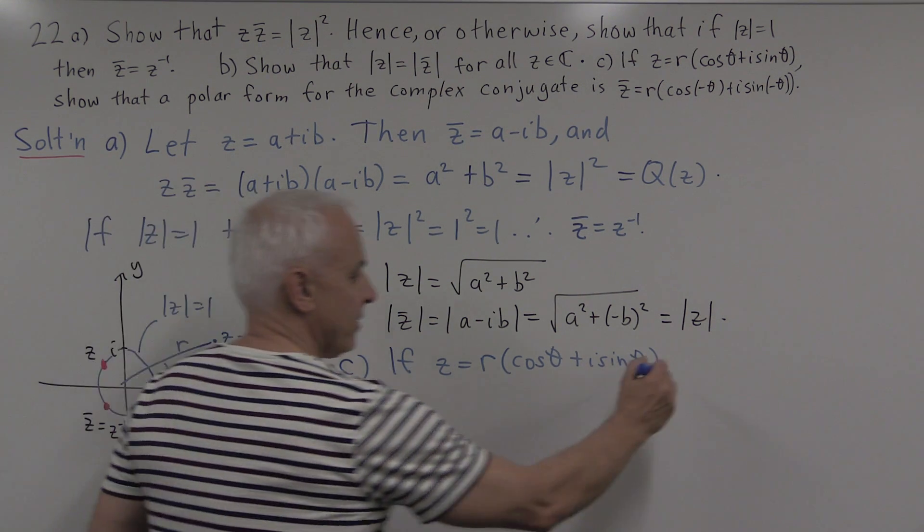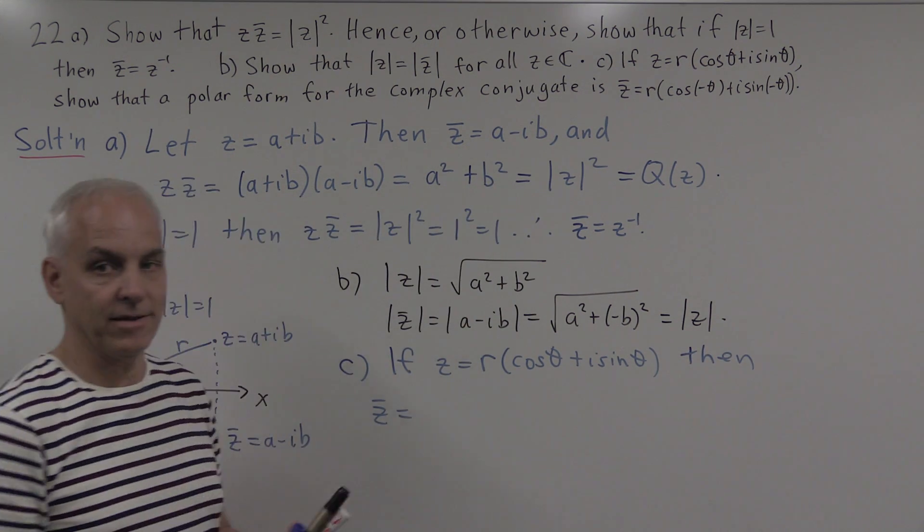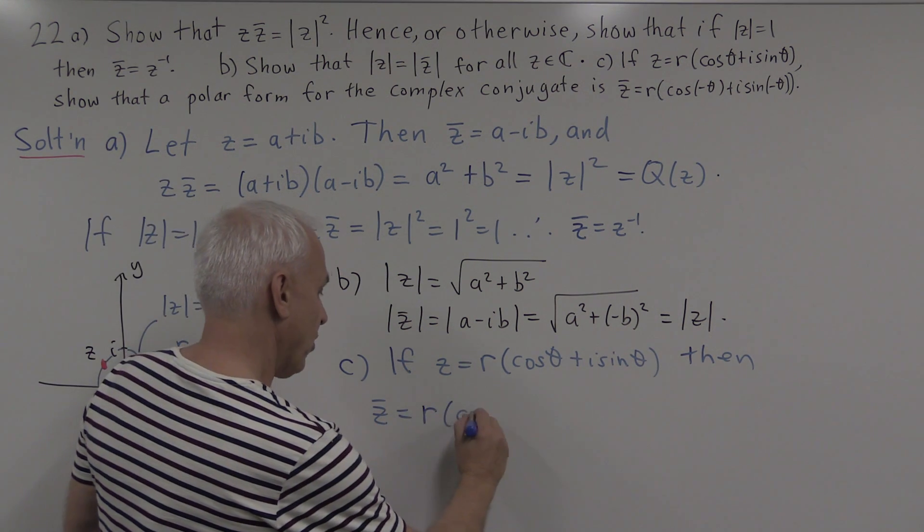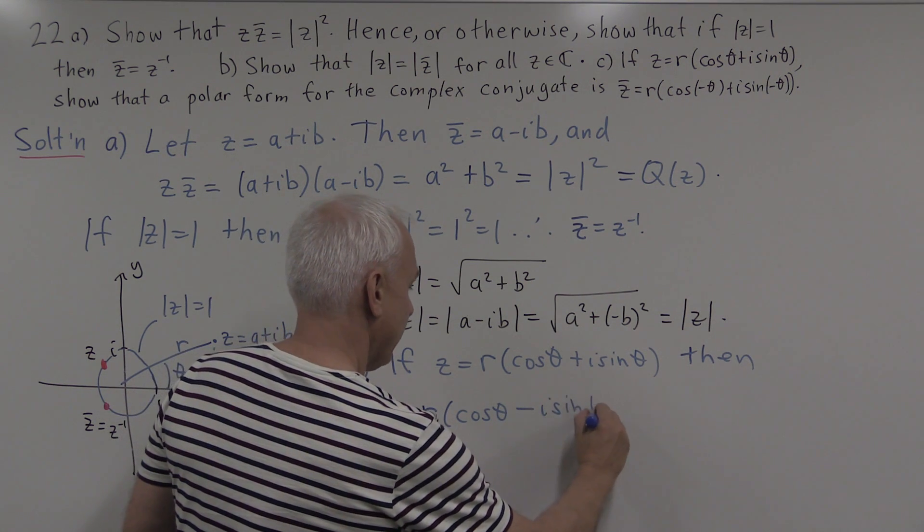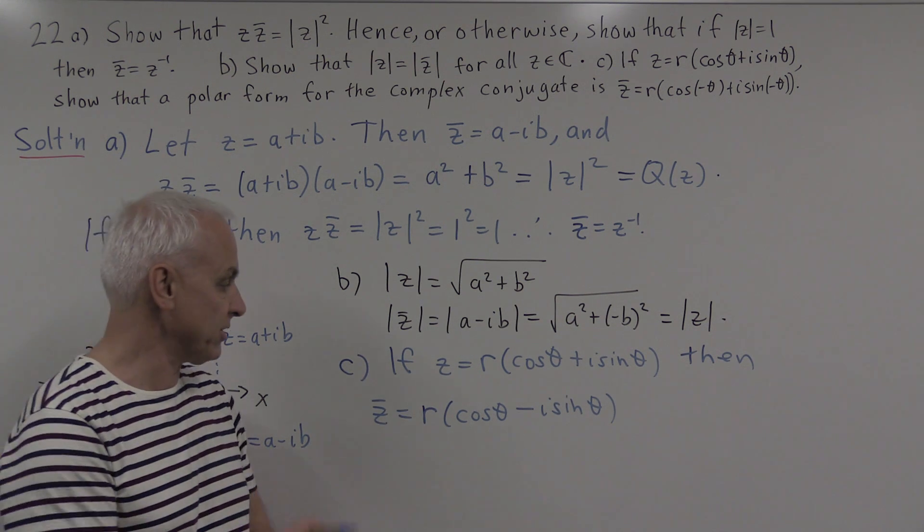Well, we can write down what z-bar is because we know that we just have to negate the imaginary part. So that's going to be r times (cos θ - i sin θ). We've just negated the imaginary part to get the complex conjugate.